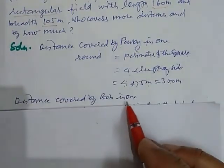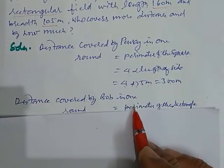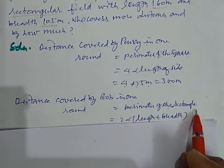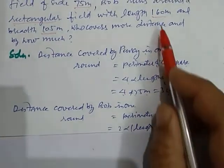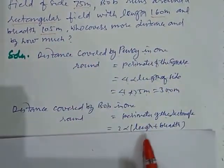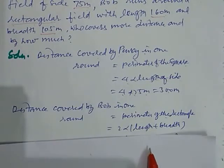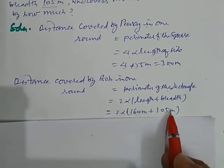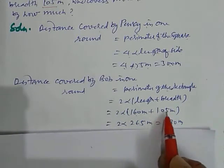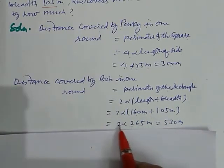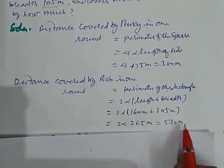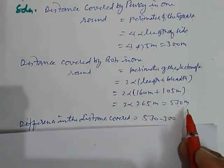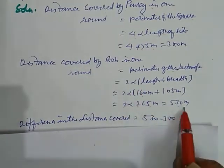So distance covered by Bob in one round is perimeter of the rectangle. And here we have provided length and width is 160 meter and 105 meter. So by putting the value, we get 160 plus 105 is 265. So 2 into 265, that is 530 meter. So this is the distance covered by Bob in one round.